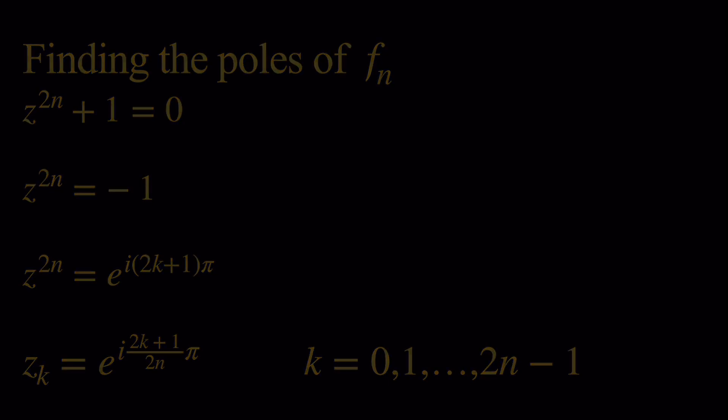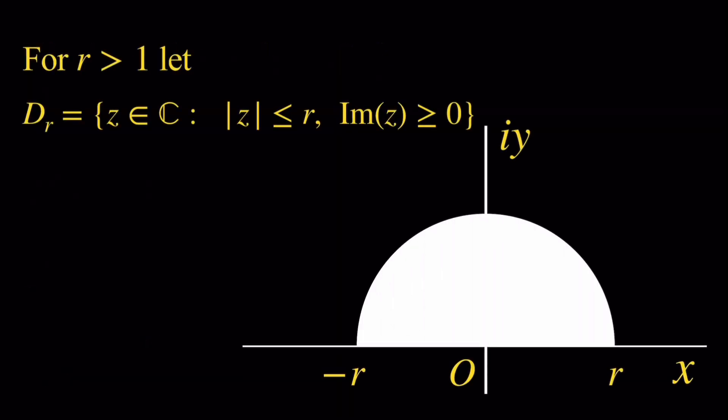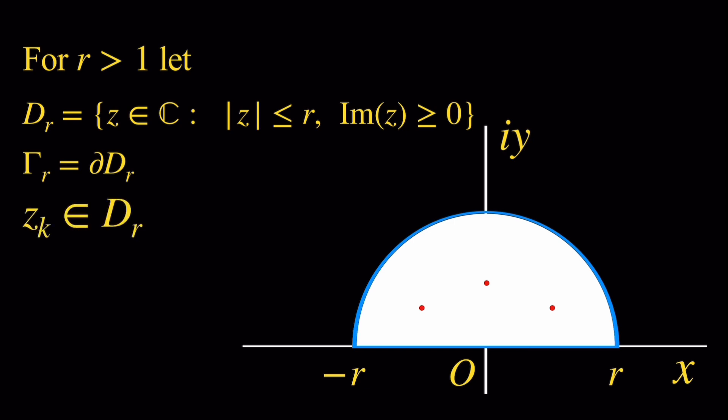Now we're not going to use all these poles, because some of them are not going to be contained in the domain — they won't be inside the contour we're going to use. For the contour, we start with a real number r greater than 1, and we denote by D sub r the upper half disk of radius r centered at the origin. We denote by gamma sub r its boundary. For example, when n equals 3, we have exactly 6 poles, and 3 of them are inside the region. We want to find the values of k for which z sub k is inside D sub r.